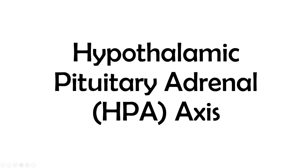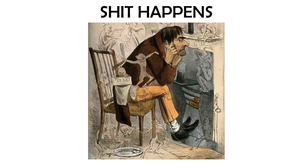Welcome to a simplified speed run-through of the hypothalamic-pituitary-adrenal axis. First, a stressful situation is encountered. For example, like this man, you are surrounded by demons and your fish is just a pile of bones. Stressful!